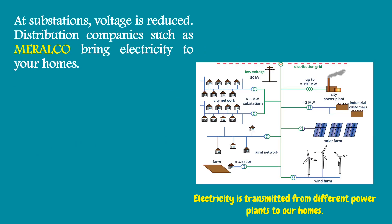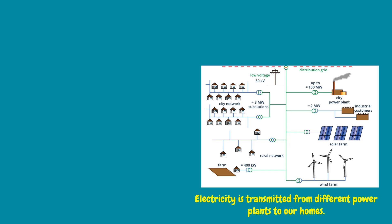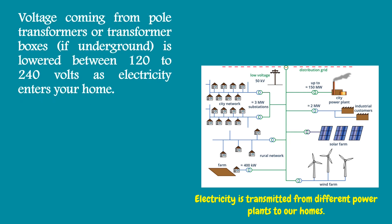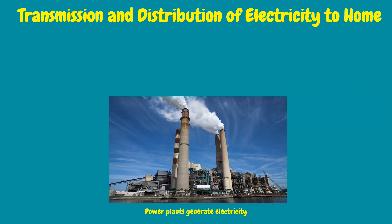At substations, voltage is reduced. Distribution companies such as Meralco bring electricity to your homes. Voltage coming from pole transformers or transformer boxes is lowered to between 120 and 240 volts as electricity enters your home. In general, the distribution system is the electrical system between the substation fed by the transmission system and the consumer end.